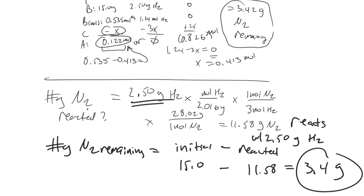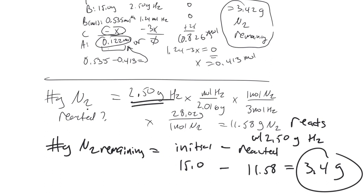Showing two or three ways to solve every problem hopefully takes away complexity rather than adding to it. If we can understand three different ways to solve a problem, we're that much closer to having a strategy for every problem on this topic correctly.